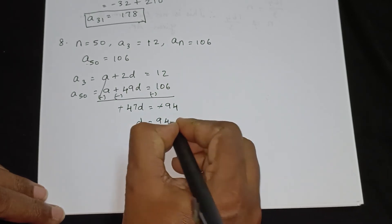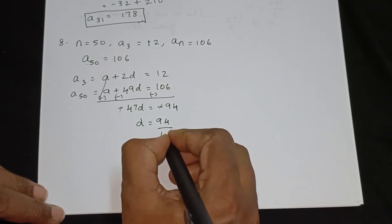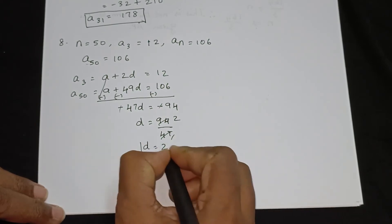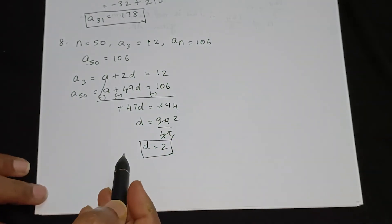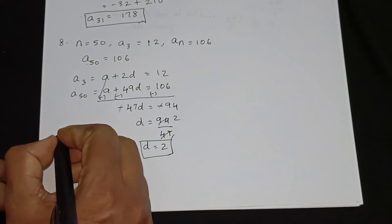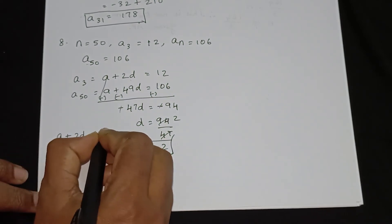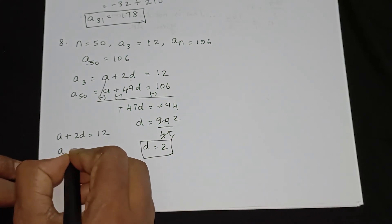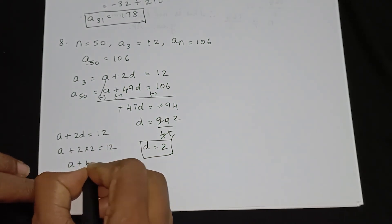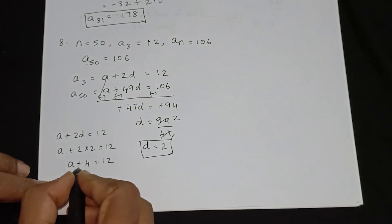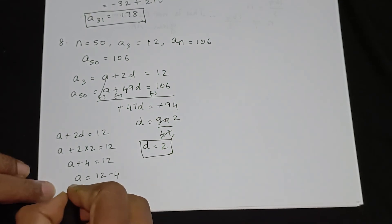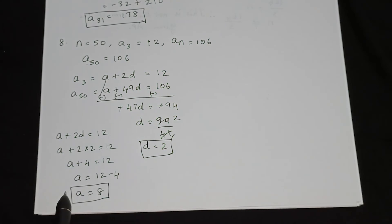Using elimination: subtracting gives 47d equal to 94, so d is equal to 94 divided by 47, which equals 2. So d is equal to 2. Substituting back: a plus 2d equals 12, so a plus 4 equals 12, giving a is equal to 12 minus 4, so a is equal to 8. Now we have a equals 8 and d equals 2.